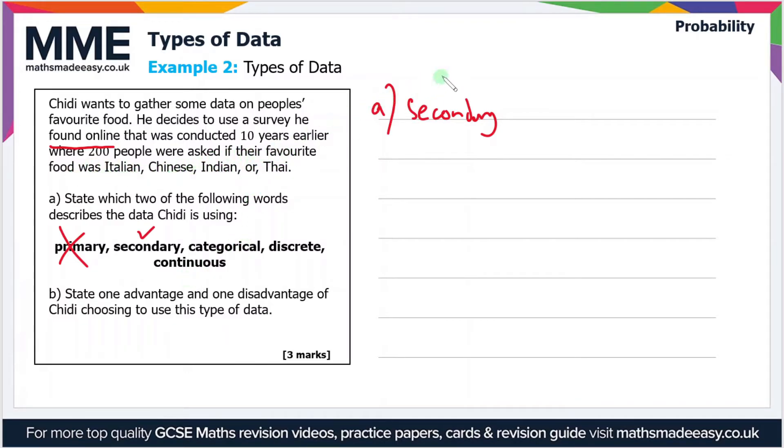We can rule out discrete and continuous because the data is not numerical. So those are our two words which describe the data he's using.